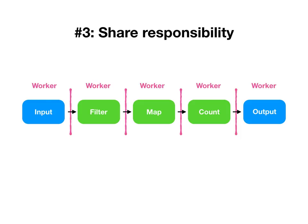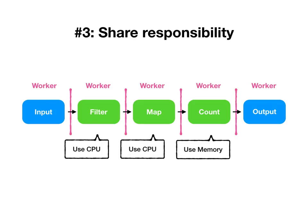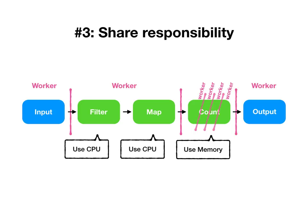Generally these operators can have different requirements. Maybe filter and map both require relatively more CPU than memory, and count — which needs to remember what it's seen — may require relatively more memory than CPU. That might cause us to lay these out slightly differently: maybe we have one worker handle filter and map, and a whole bunch of workers handle count. It turns out this can be exactly the wrong thing to do — there are a bunch of choices the system has to make and it can make them badly.